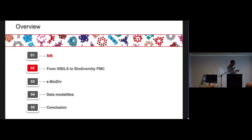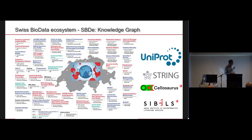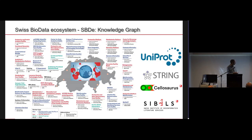Just a few words about SIB. The SIB is the Swiss Institute of Bioinformatics. We maintain molecular biology databases — some of you may be familiar with UniProt or Cellosaurus, which are flagships in the molecular biology world. We are engaged in a large project called the Swiss BioData Ecosystem, which is delivering what is probably the largest knowledge graph in the world in biology.